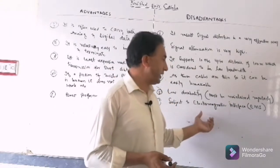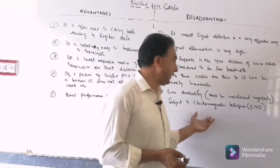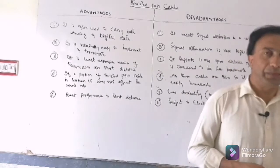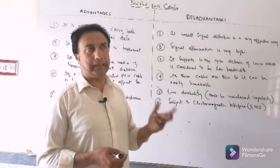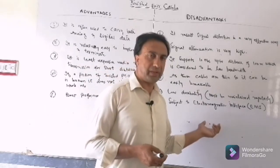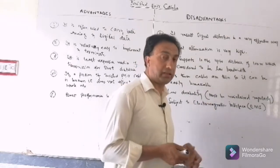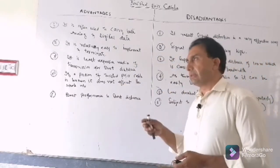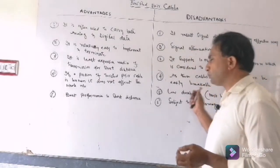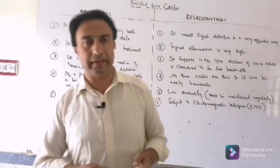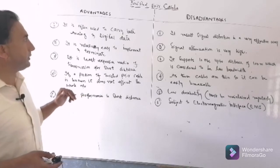The sixth disadvantage is that it is subject to electromagnetic interference (EMI). Electromagnetic interference means the effect of the current of one wire on another wire. Due to the flow of current in one wire, it affects the flow of signal in the second wire, resulting in distortion of the signal. So these were the advantages and disadvantages of the twisted pair cable.